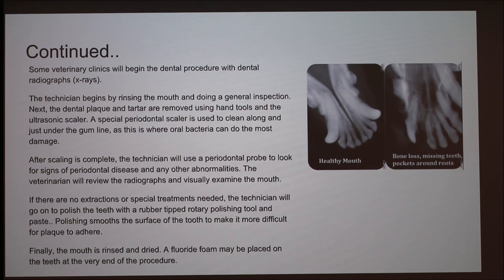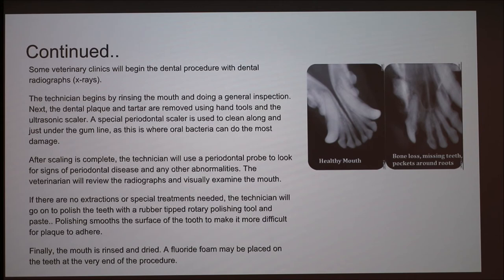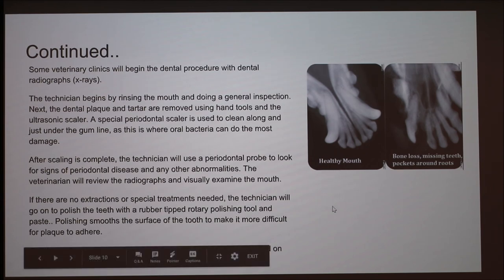Some veterinary clinics will begin with an x-ray if needed. The mouth is rinsed, and dental plaque and tartar are removed using tools. A special periodontal scaler is used to clean along and just under the gum line, where oral bacteria can do the most damage. A periodontal probe is used to look for signs of periodontal disease and abnormalities. The vet reviews x-rays and teeth to determine if extractions are needed. If no extractions are required, the tech polishes the teeth with a rubber-tipped rotary polishing tool and paste, which smooths the tooth surface to make it more difficult for plaque to adhere. Finally, the mouth is rinsed, dried, and a fluoride foam can be placed on the teeth.